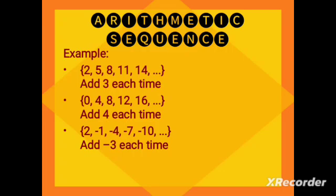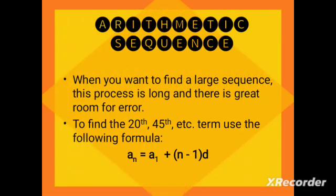Now for examples — we want to find the common ratio of the following sequences. For number one, the sequence is 1, 2, 4, 8, and 16. The common ratio is 2, because 2 over 1 equals 4 over 2, equals 8 over 4, equals 16 over 8, which all give you 2. You can do the same with numbers two, three, and four to get their common ratios.